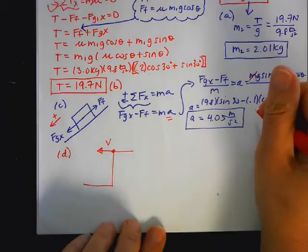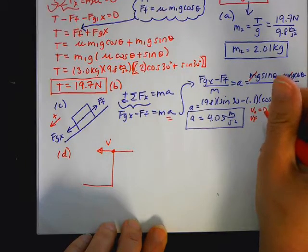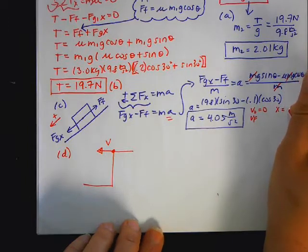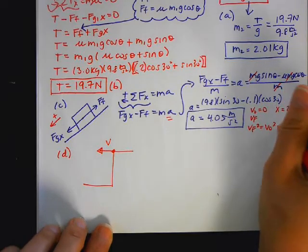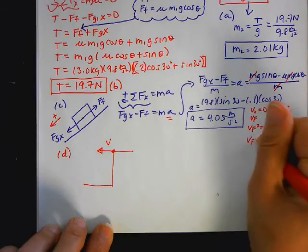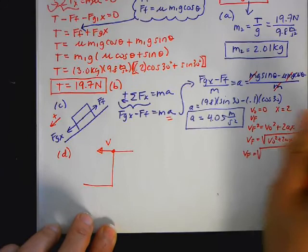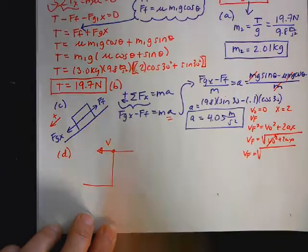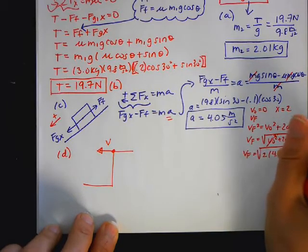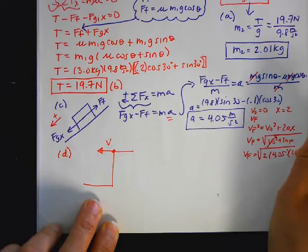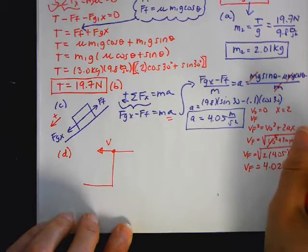Whoops. So to find the final velocity, V naught is 0, VF we want to find, and the X is equal to 2. So I'm going to say VF squared is equal to V naught squared plus 2AX. So VF is equal to the square root of all that. So VF is equal to the square root of V naught is 0 because this starts from rest once it's cut. So it's going to be 2 times 4.05 times 2 meters. So VF comes out to be 4.02 meters per second.